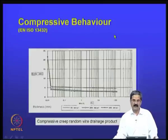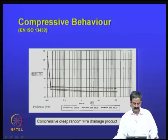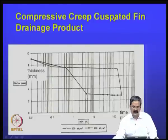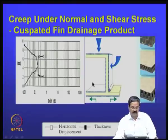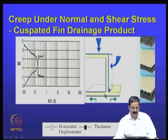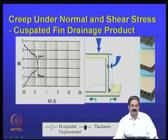Compressive behavior is also important since many geosynthetic materials are compressible. Compressibility under different confining pressures is particularly important for drainage products, because if compressibility is more, drainage is less. One product is the cuspid fin drainage product, used for drainage in retaining walls. It has projections or fins, and instead of using backfill next to the retaining wall, this material serves as drainage — it is permanent, has smaller thickness, and is cheaper than sand or gravel.